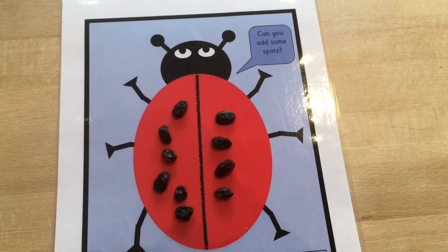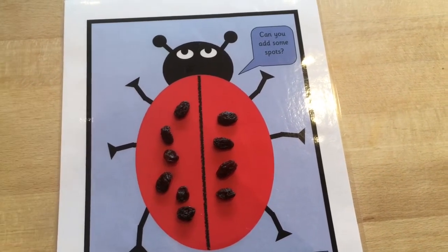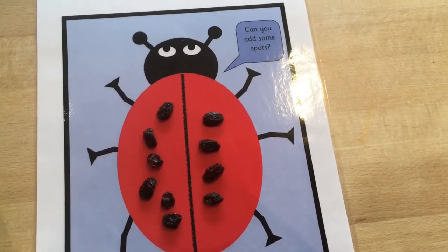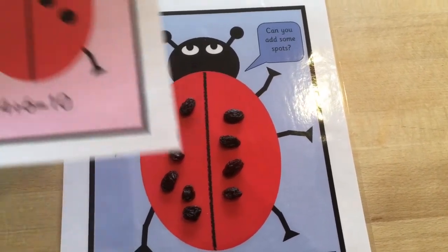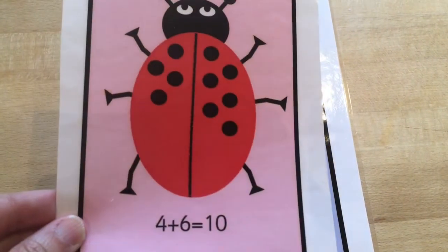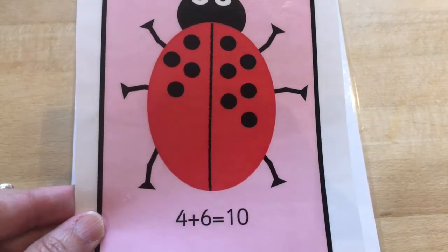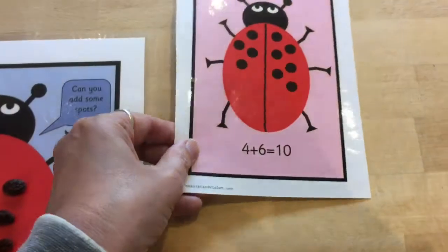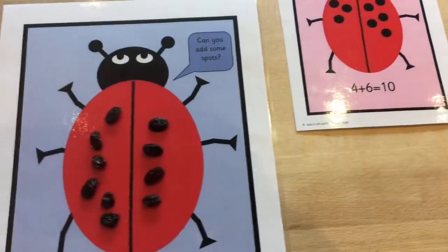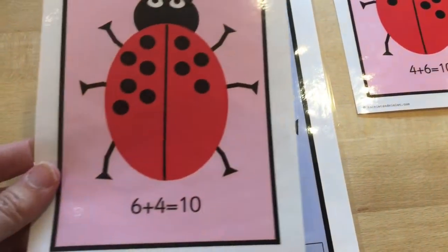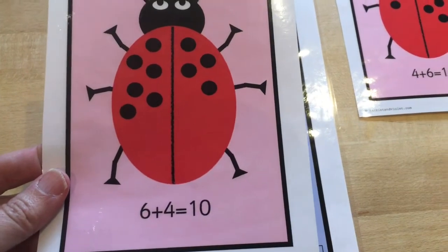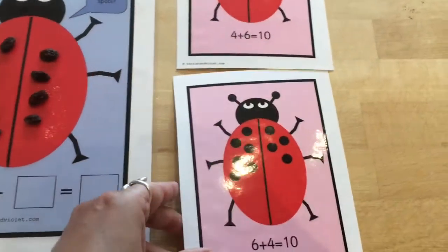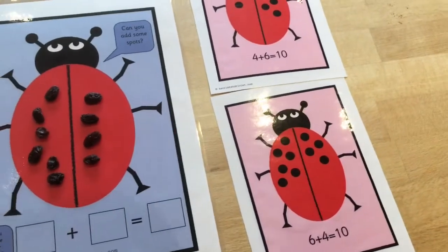6 and 4 makes 10. Hang on a minute — didn't we just have that? Let's have a look. This was 4 and 6 make 10, but this ladybird is the other way round: 6 and 4 make 10. They're kind of the same, aren't they? But not quite.